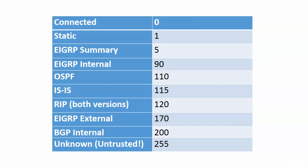Connected routes are the only route type that will not have brackets — a connected route is considered to have an administrative distance of zero. Static routes are considered to have an AD of one. There are discussions online about whether a static route has an AD of one or zero depending on whether you use the exit interface or the next-hop IP address when writing it, but Cisco's documentation is clear: a static route AD is one, and that's what we're going with.